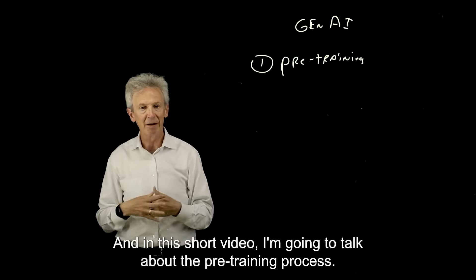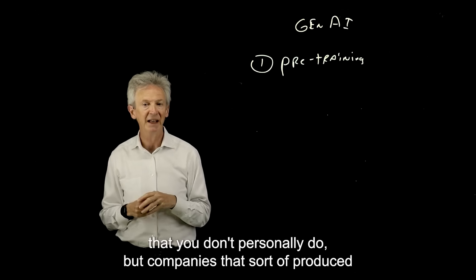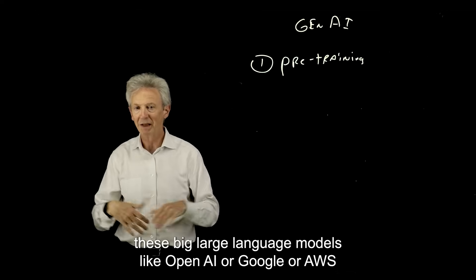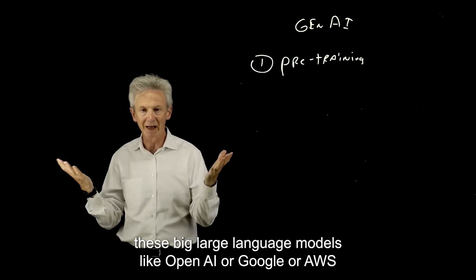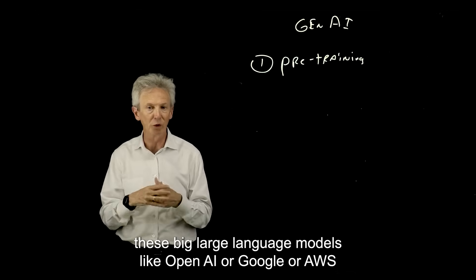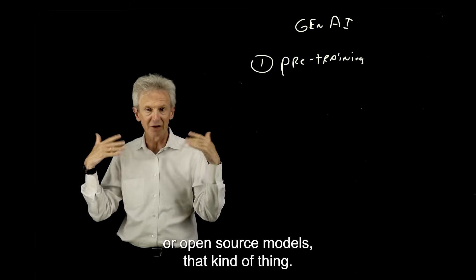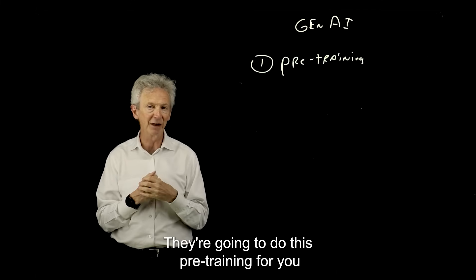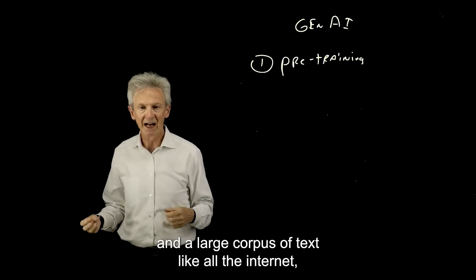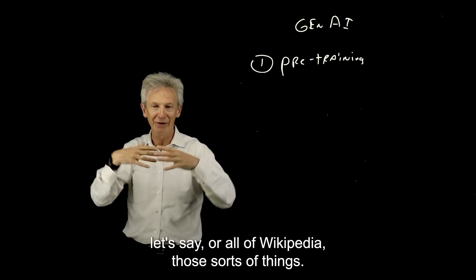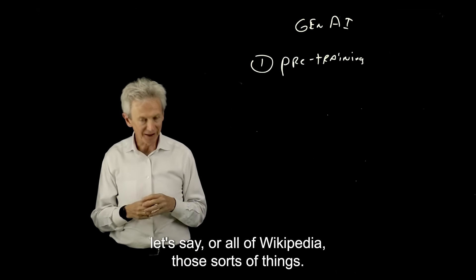I'm going to talk about the pre-training process. This is the training that you don't personally do, but companies that produce these large language models like OpenAI or Google or AWS or open source models, they're going to do this pre-training for you on a large corpus of text, like all the internet, or all of Wikipedia or those sorts of things.